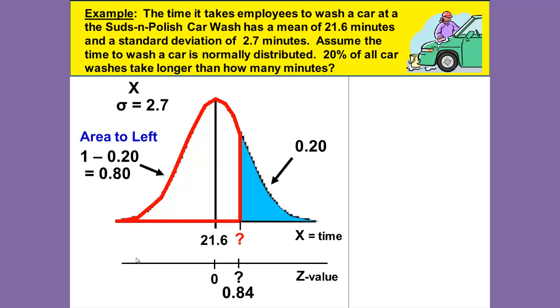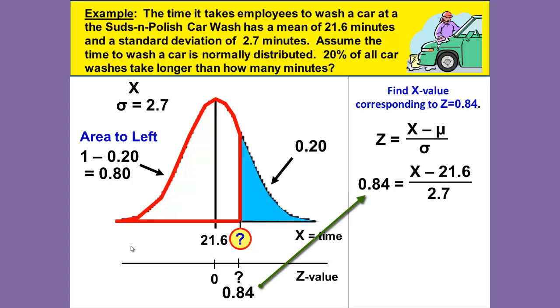Once we have our z value, we now want to find our x value, and we want to find the x value corresponding to the z value of 0.84. Our formula is z equals x minus mu over sigma, or z equals x minus the mean over the standard deviation. We know the z, it's 0.84. We do not know the x, so we'll leave it as x. The mean, or our mu, is 21.6, and the standard deviation is 2.7.